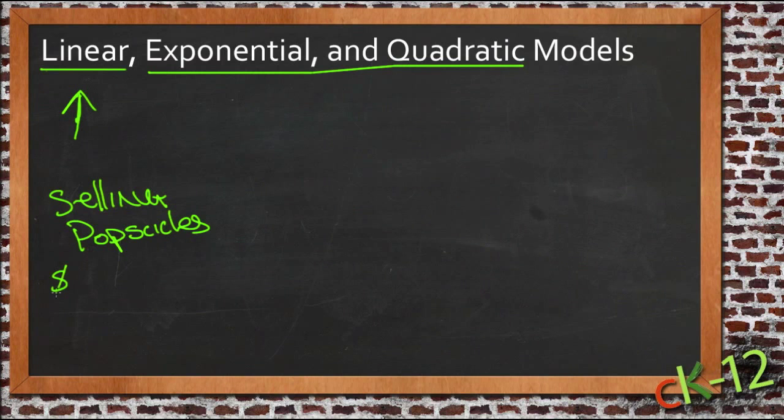Say you're selling popsicles for a dollar each. Then every time you sell another popsicle, you get another dollar. So your profit is equal to the number of popsicles, let's just say P, times one.